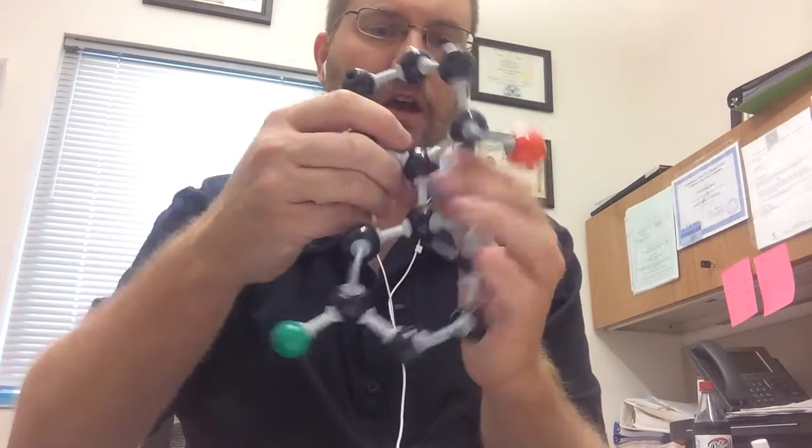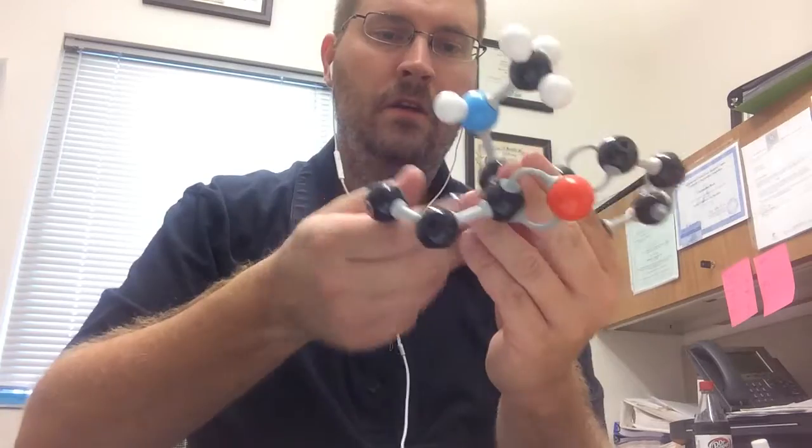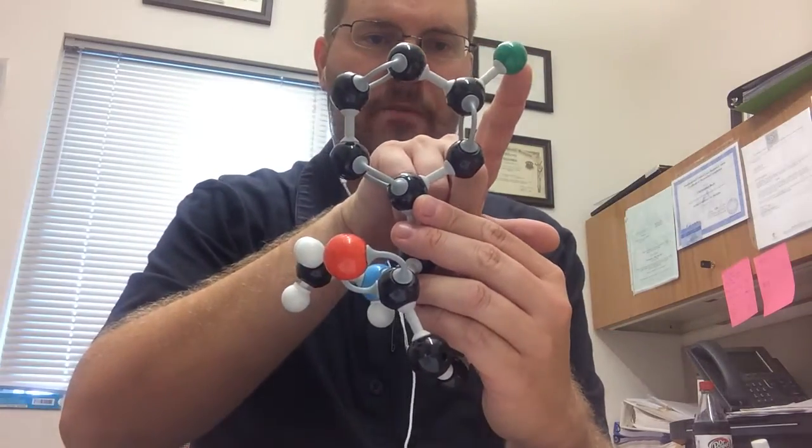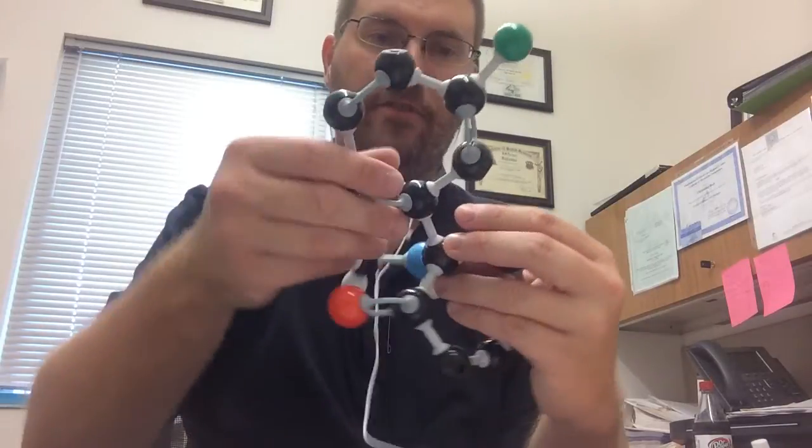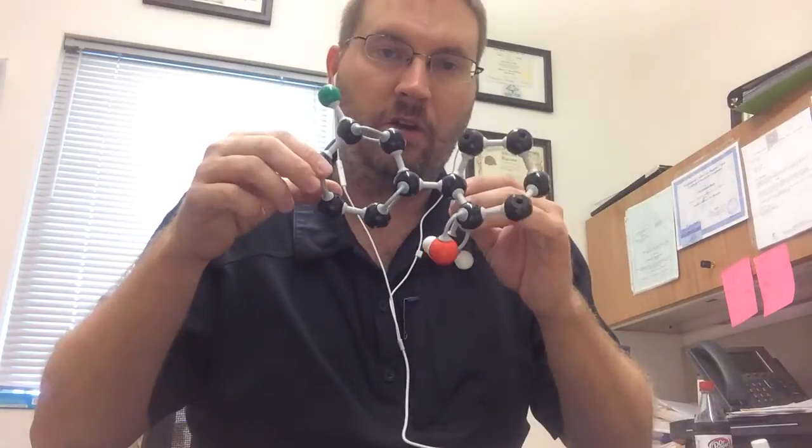Here I have a cyclohexane ring here with a carbonyl, a double bond to an oxygen, a nitrogen and a methyl group. I have my aromatic ring, and then I have a chlorine atom right here attached to the aromatic ring. This molecule here is called ketamine. Some people call this special K.